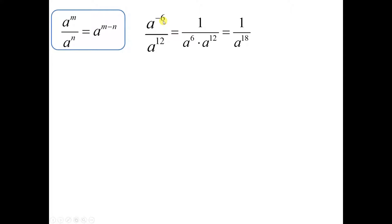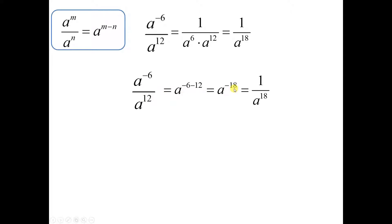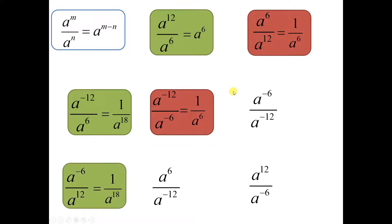Expression 5: a to the negative 6th divided by a to the 12th. The way I see this is I've got division of 6 a's in the numerator, and the way I write division is by putting it in the denominator — and I already have 12 there. So I write it with 18 a's in the denominator: 1 over a to the 18th. Or using the rule: negative 6 minus 12 is negative 18, so you have a to the negative 18, which rewrites as 1 over a to the 18th. This turns out to be the same as expression 3 — 6 and 12 are both dividing, so they go to the denominator and give 18.